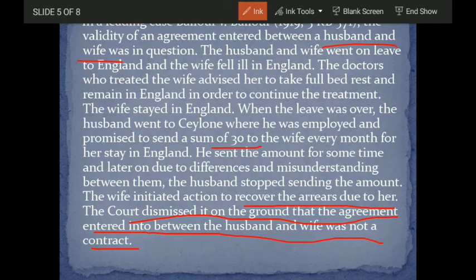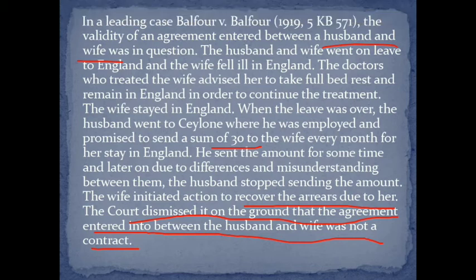He sent money for some time, but then there was misunderstanding and differences, and the husband stopped sending money. The wife initiated a legal action for all the arrears, claiming there was a contract — that her husband had made an agreement with her and she should receive the money. The court dismissed it.